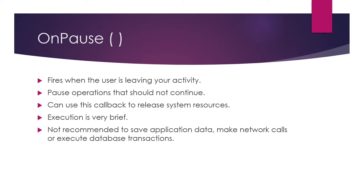There are several reasons why an activity may enter the paused state — for example, an interrupt event like receiving a phone call, or a new semi-transparent activity such as a dialog box opening. We can also use the onPause method to release system resources such as GPS or any resource that may affect battery life when the user does not need them.